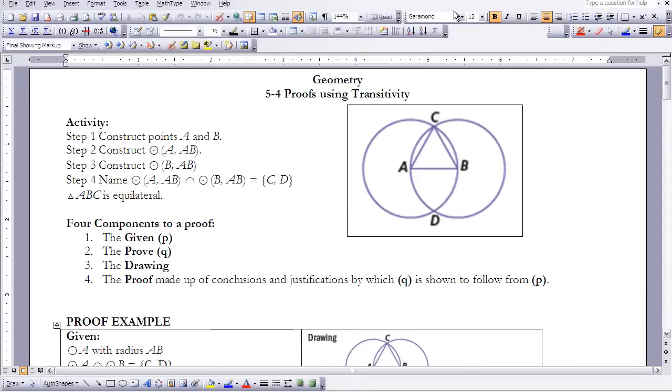This is Geometry Lesson 5-4, Proofs Using Transitivity. In class, we worked through the activity that caused you to create two interconnecting circles, and then it gave you a triangle A, B, C.